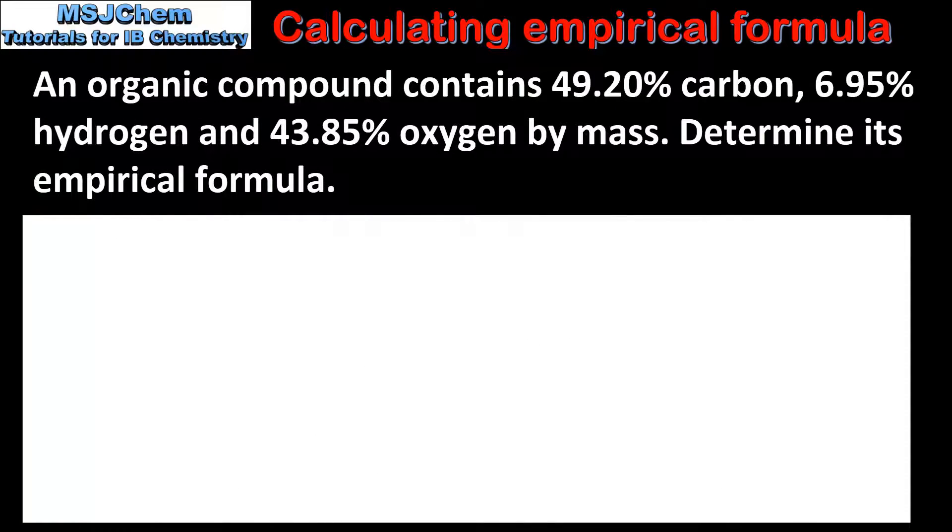Let's look at one more example. An organic compound contains 49.2% carbon, 6.95% hydrogen, and 43.85% oxygen by mass. Determine its empirical formula.